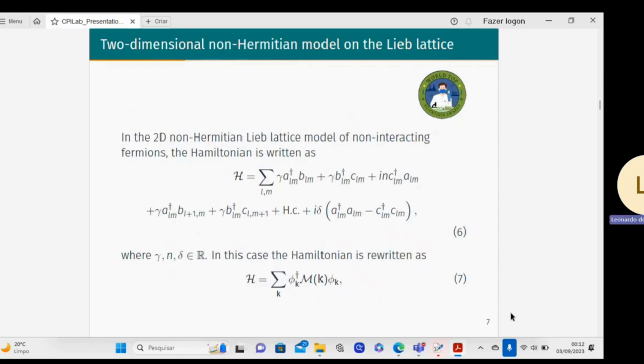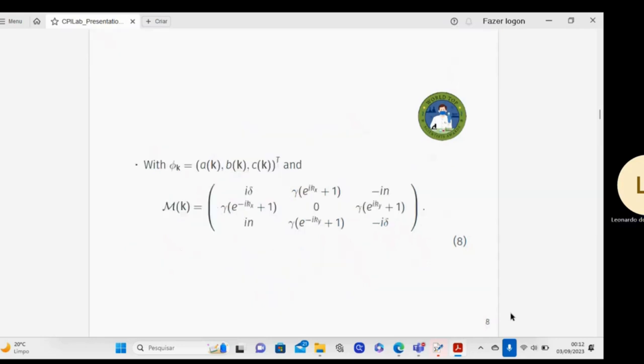Another model that I consider is the two-dimensional non-Hermitian model on the Lieb lattice. In the model, it represents non-interacting fermions on the Lieb lattice. The Hamiltonian is written as equation 6, in this case where gamma and delta are real numbers. In this case, the Hamiltonian is written in the matricial form, where the matrix H depends on the non-Hermitian parameters as expressed in equation 8.